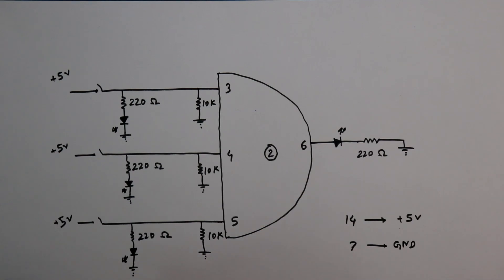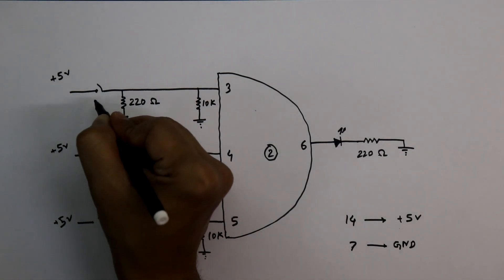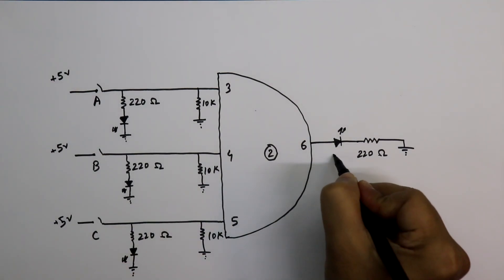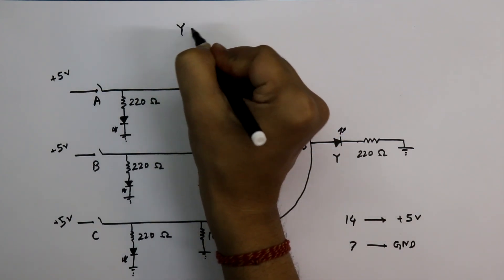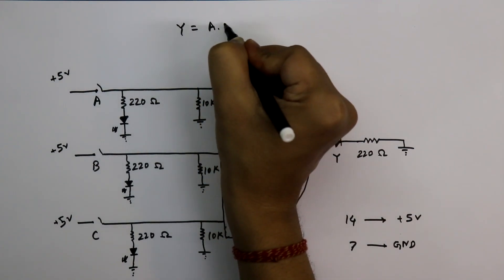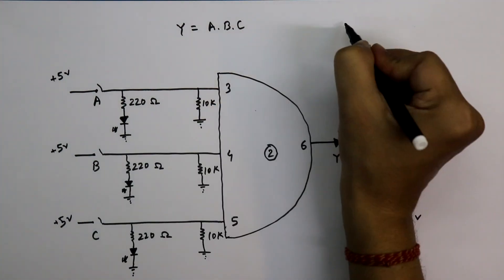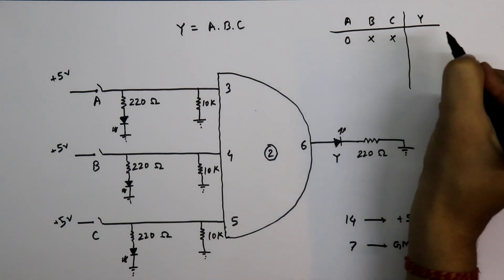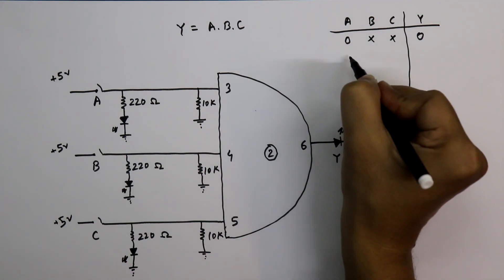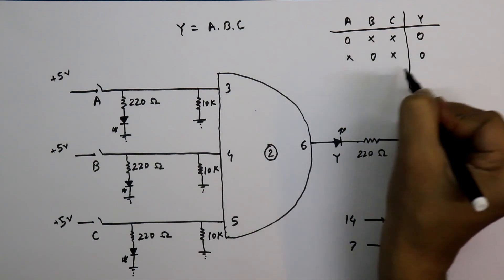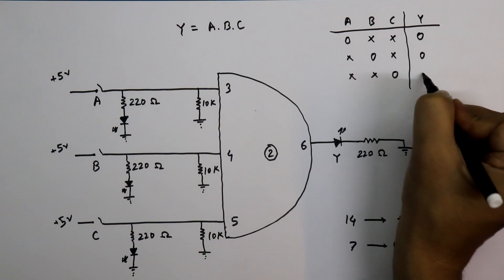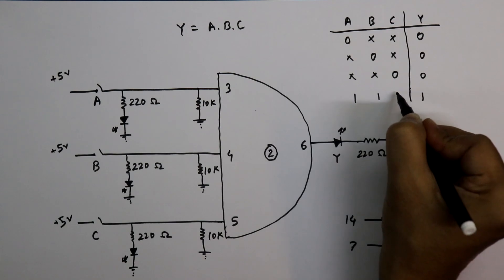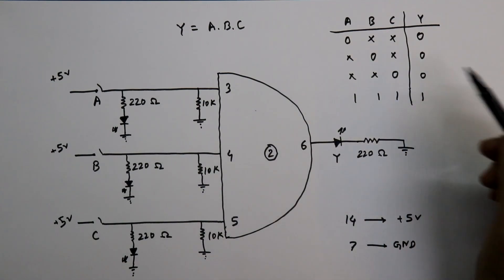Now see the truth table for this. Our 3 inputs will be A, B, and C, and output Y. So Y equals A dot B dot C. If any input is 0, then our output will be 0. The output will be 1 whenever all the inputs are 1. Okay, so this is our truth table.